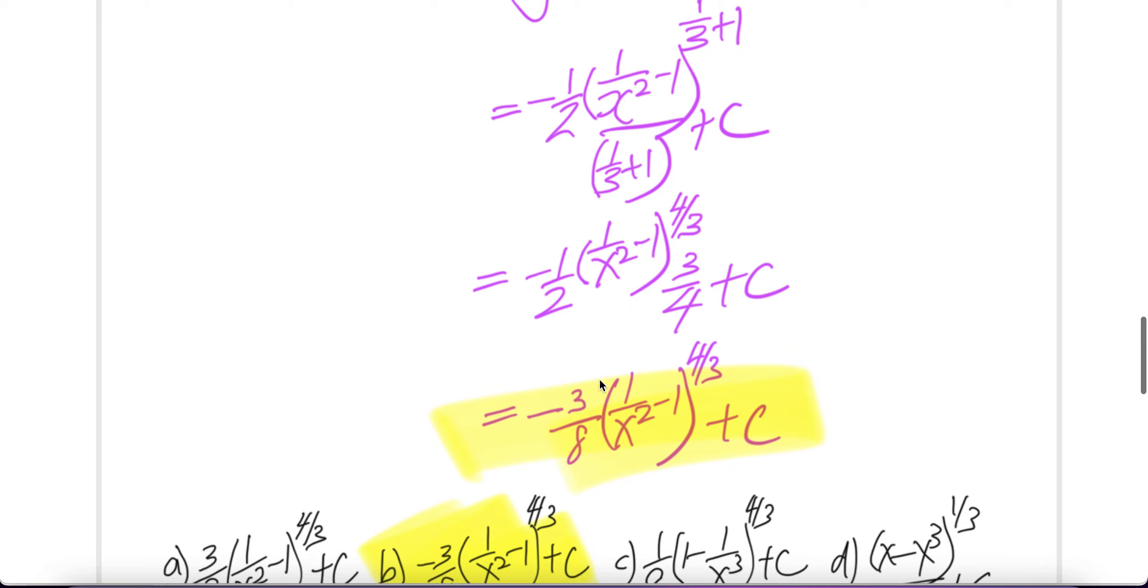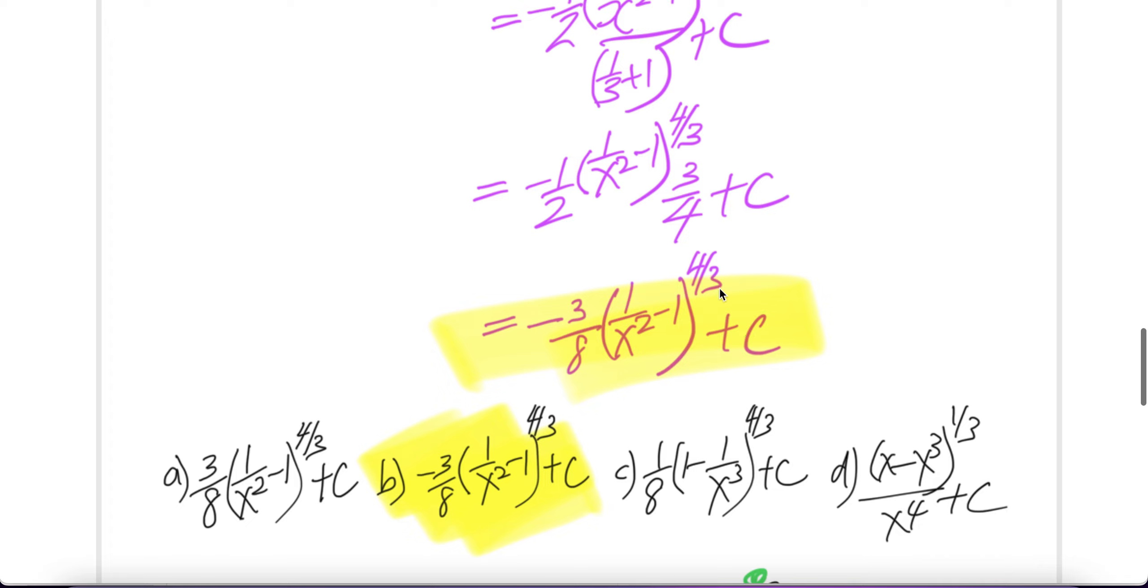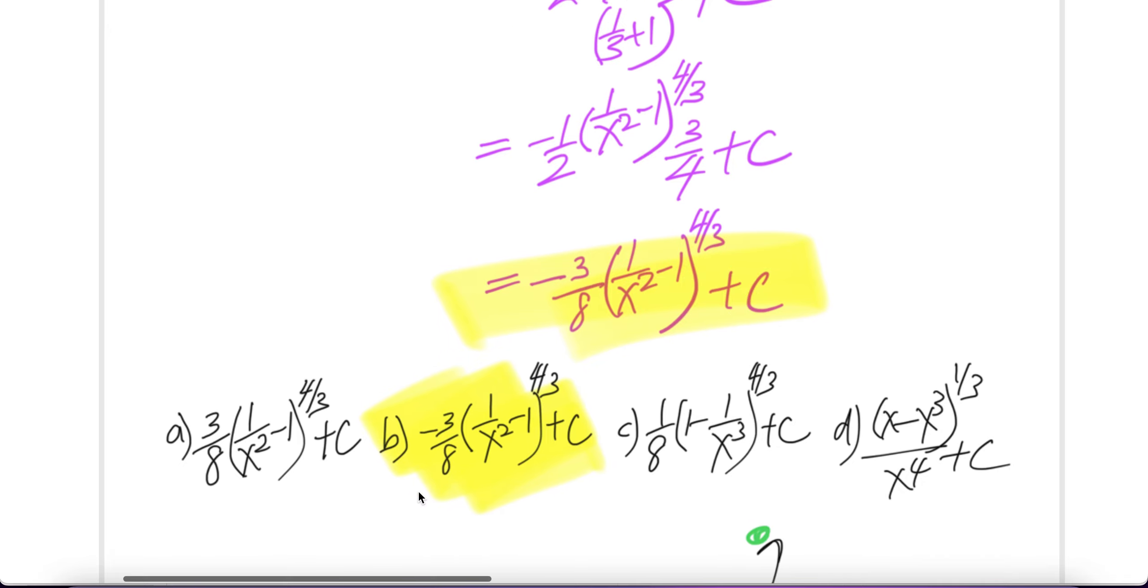Negative 3 over 8, 1 over x square minus 1 to the power of 4 over 3 plus c. Quick answer, this one is the same as what we got, b.